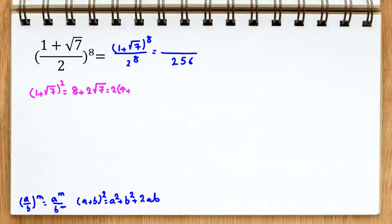Which we can factor as 2 times 4 plus root 7. And in the next step, we calculate 1 plus root 7 to the power of 4. Because we know 1 plus root 7 squared is what? We write it as 2 times 4 plus root 7, all squared. 2 squared is 4.